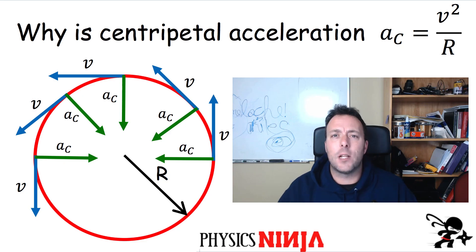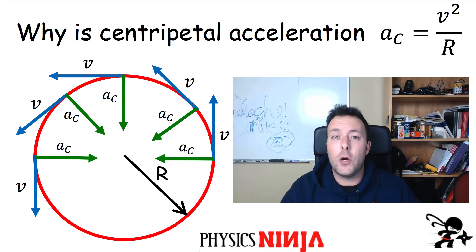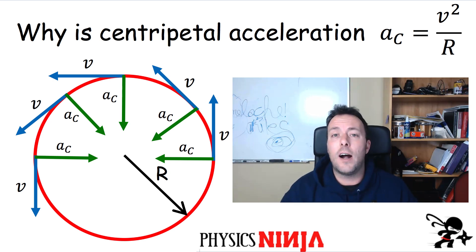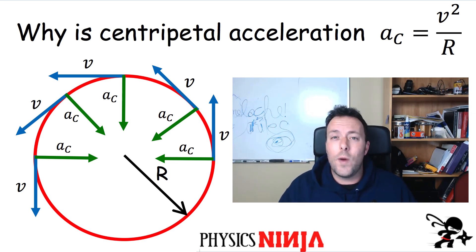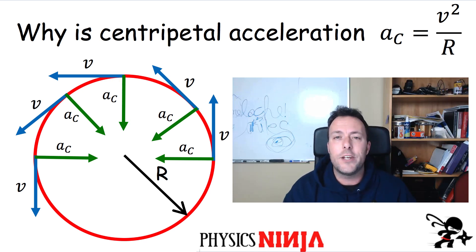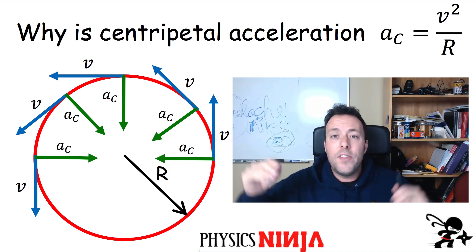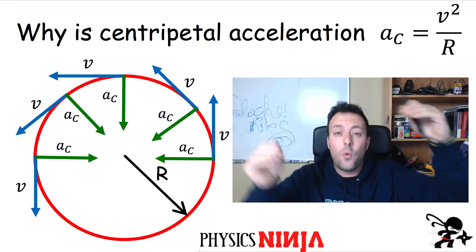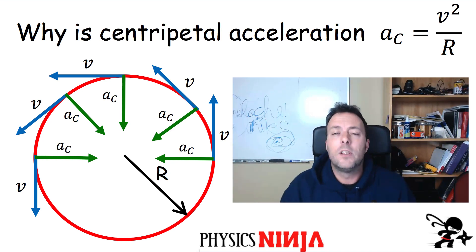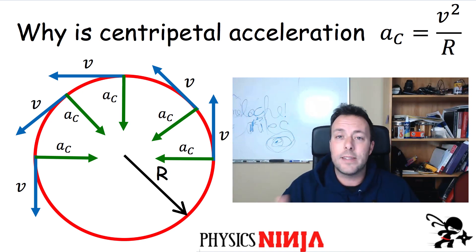We're going to look at centripetal acceleration. I'm going to show you two different ways to show that the centripetal acceleration is equal to v squared over r. That's the magnitude of the acceleration. I'm also going to show you a quick and easy way to find the direction of the centripetal acceleration. We're going to find that the acceleration is always toward the center of the circle. I'll show you two ways to do this problem. Let's get started.